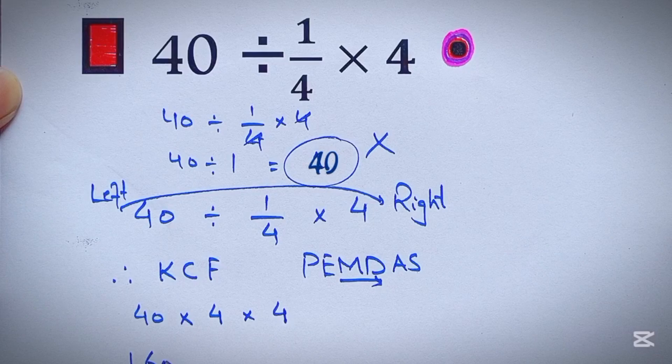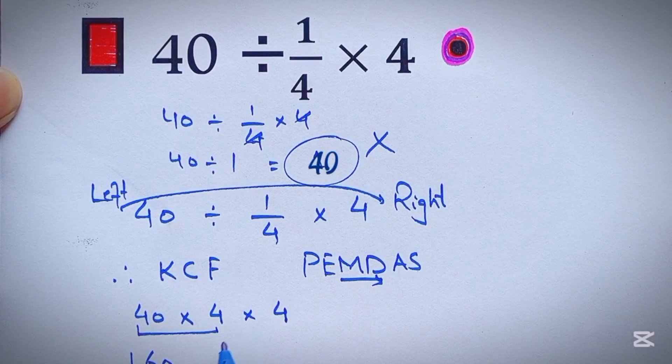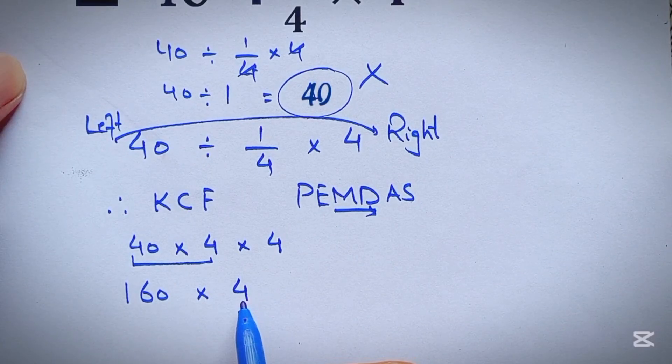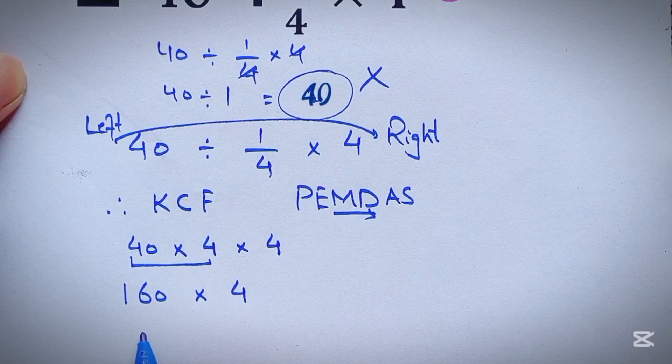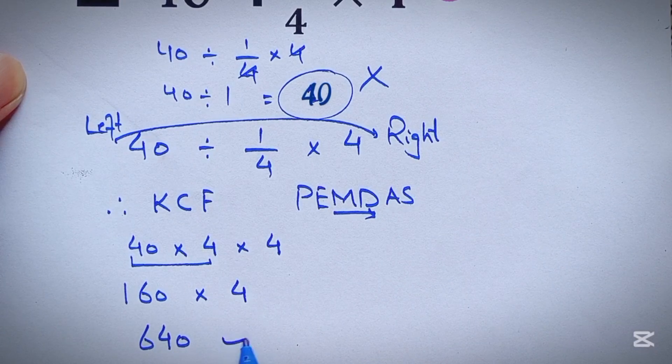Now, 40 times 4 gives us 160, and 160 times 4 equals 640. Our final answer to this problem is 640.